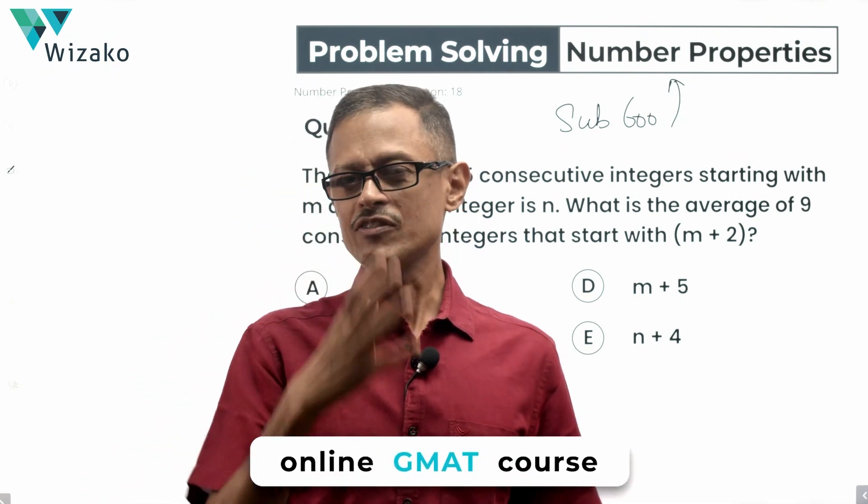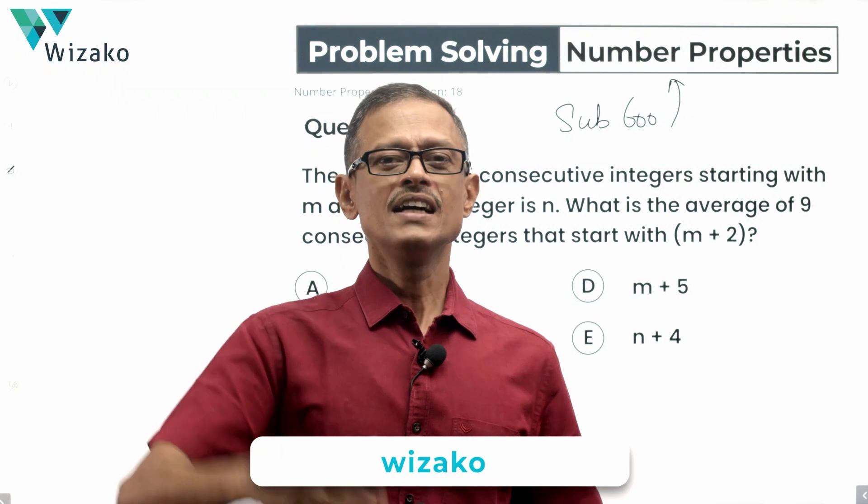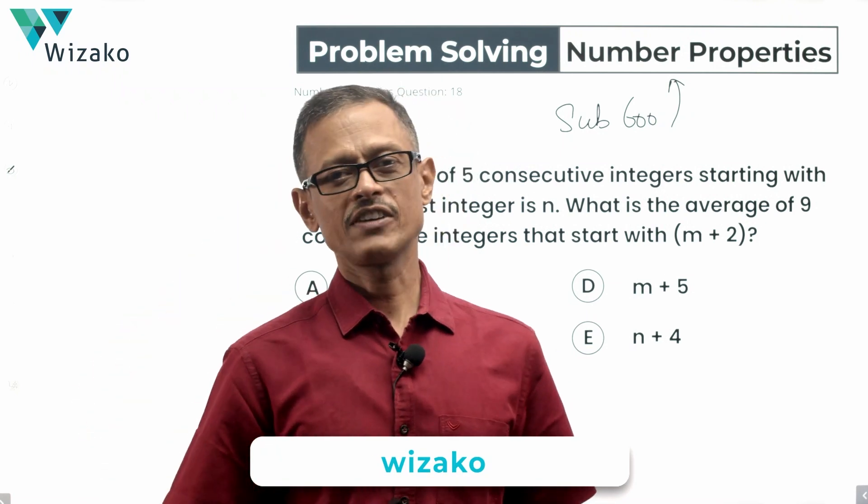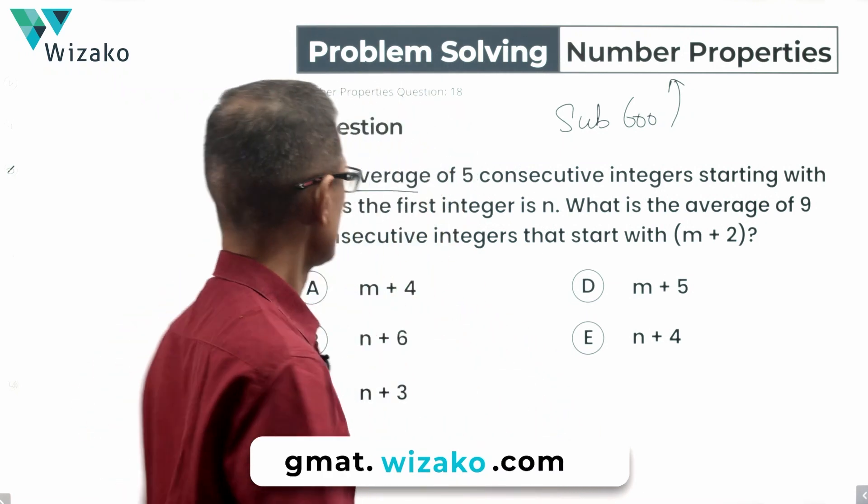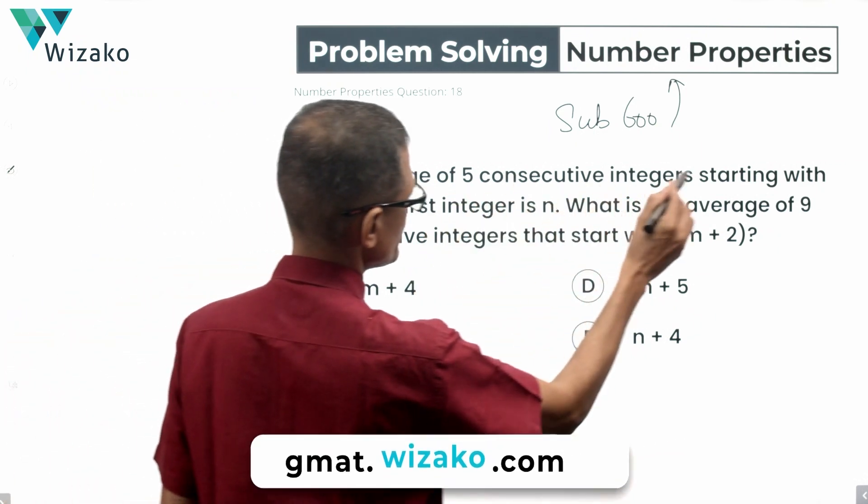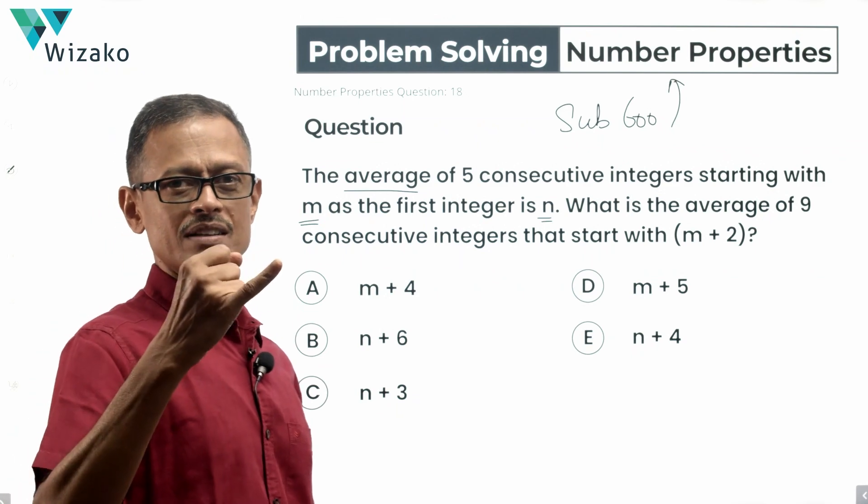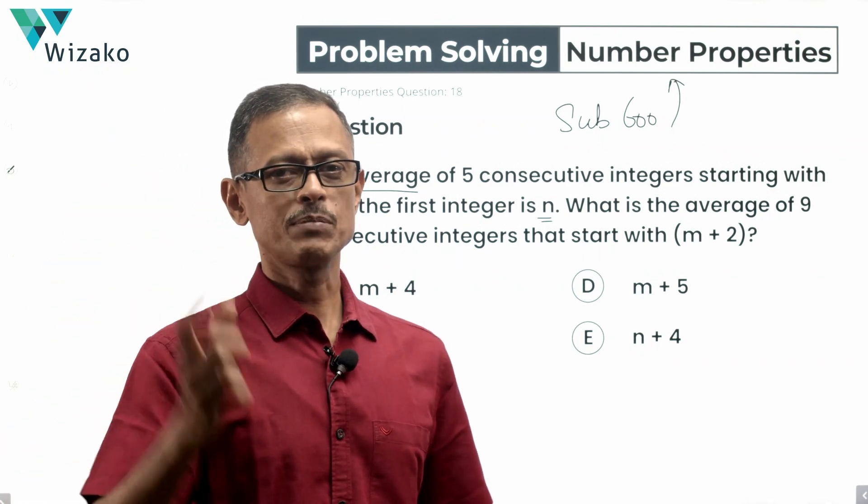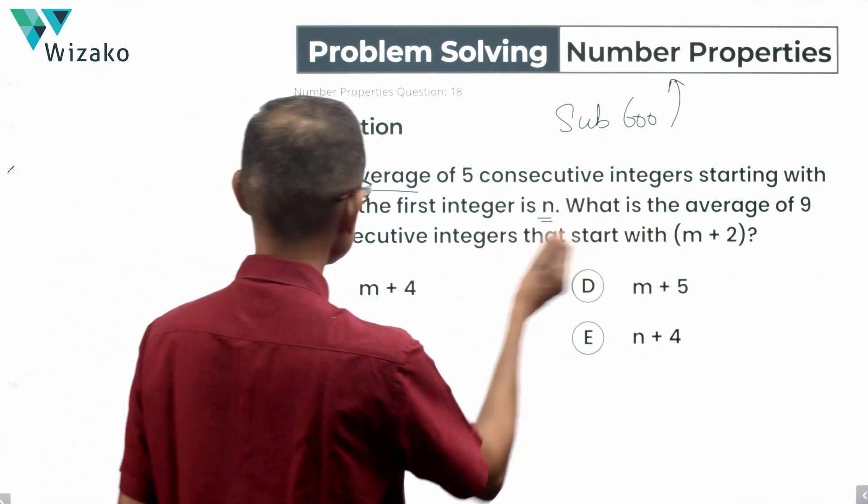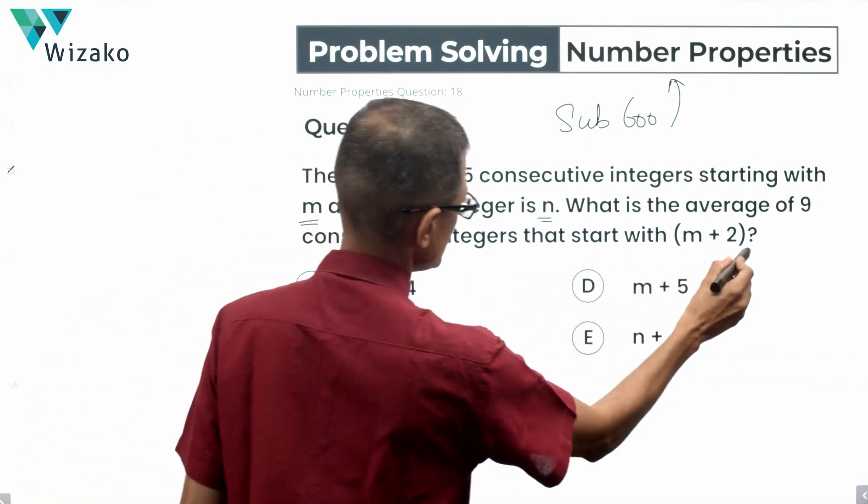Let's read the question and then spend half a minute understanding how we are going to solve it. And I want you to use that method effectively for any question of this kind. The average of five consecutive integers starting with m as the first integer is n. Starting with m, the average of five consecutive integers happens to be n. What are the average of nine consecutive integers that start with m plus 2?